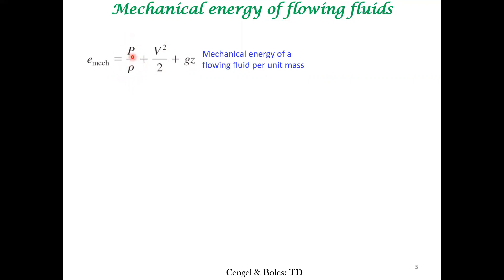Convert ρ into mass per unit volume, and you get PV by m. These are kinetic energy per unit mass, potential energy per unit mass, and the pressure-volume work per unit mass.